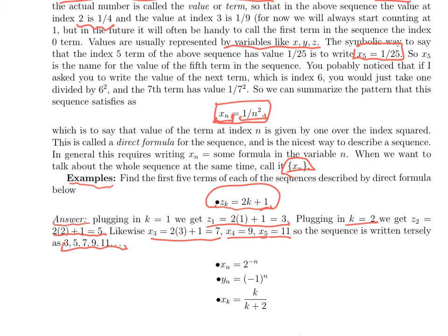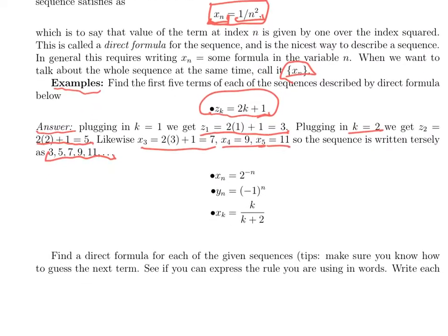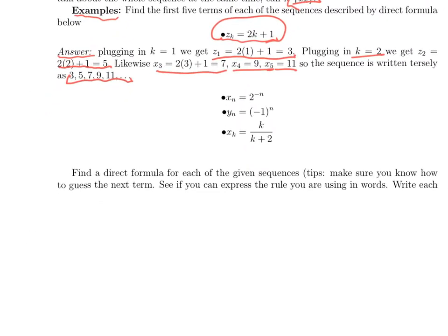So this sequence written in the dot dot dot formation is just the odd numbers 3, 5, 7, 9, 11. Notice writing it out like that, you often see the pattern more clearly than the formula. Now you should try these three.